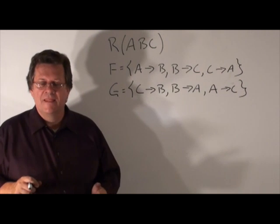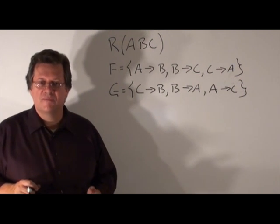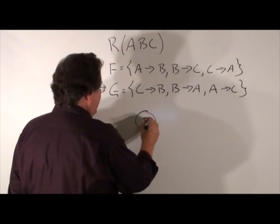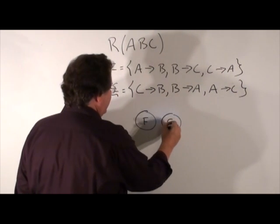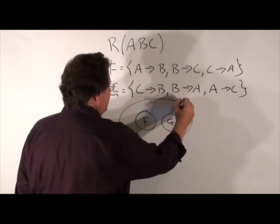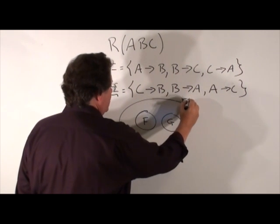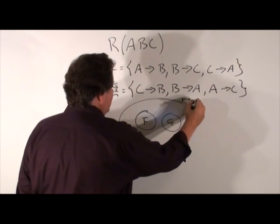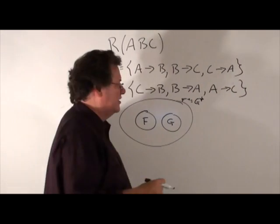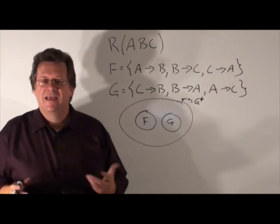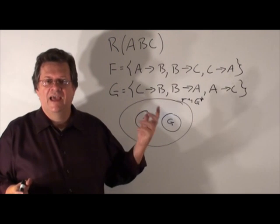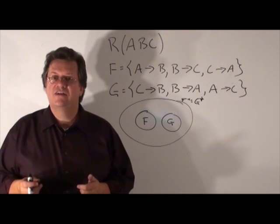As you can see, F and G have nothing in common in terms of functional dependencies. But if we look at F and G, they have the same F closure and the same G closure. So in this case, F covers G, G covers F, and F is equivalent to G.